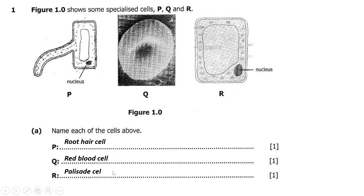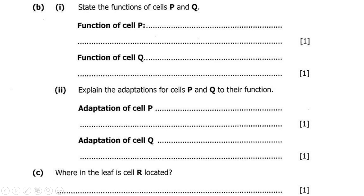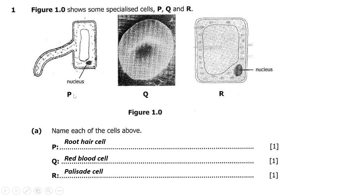So P is the root hair cell — this is how it looks with the nucleus. Q is the red blood cell — this is how it looks. And R is the palisade cell — this is how it looks. Moving to part B, Roman numeral one says state the functions of cells P and Q, which means the root hair cell and the red blood cell.